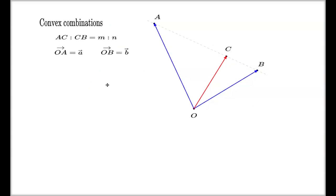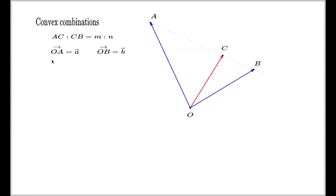It's called convex combinations of vectors. Here's a little subroutine which I'm talking about. You have two vectors given, like this, OA and OB, and you have a point C in between. It's a point which splits your segment in a particular proportion. So you have m parts here and you have n parts here.